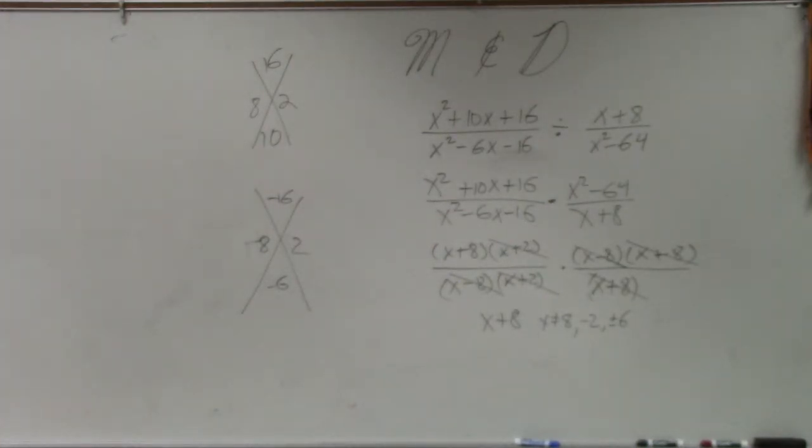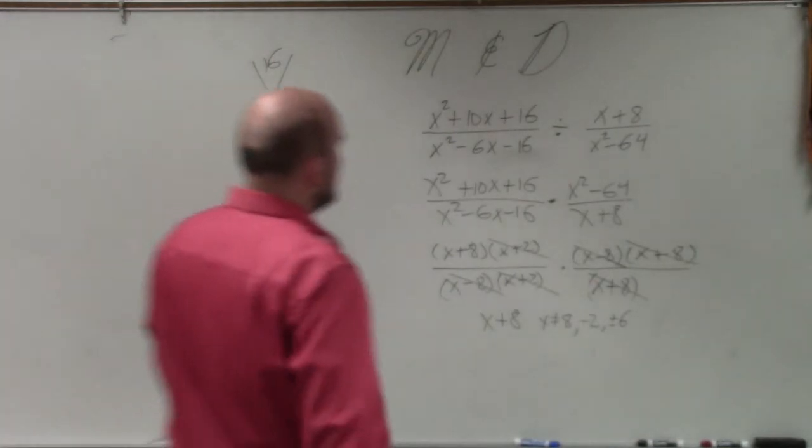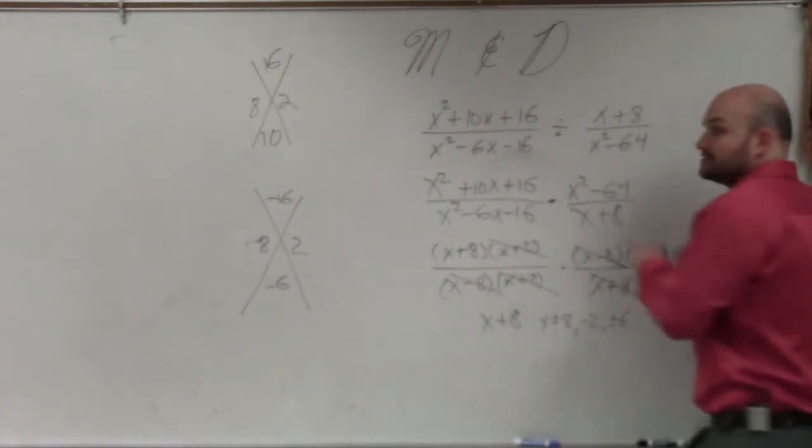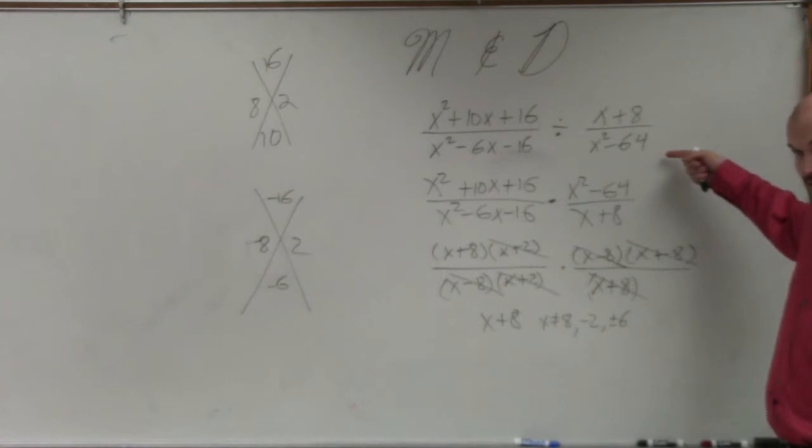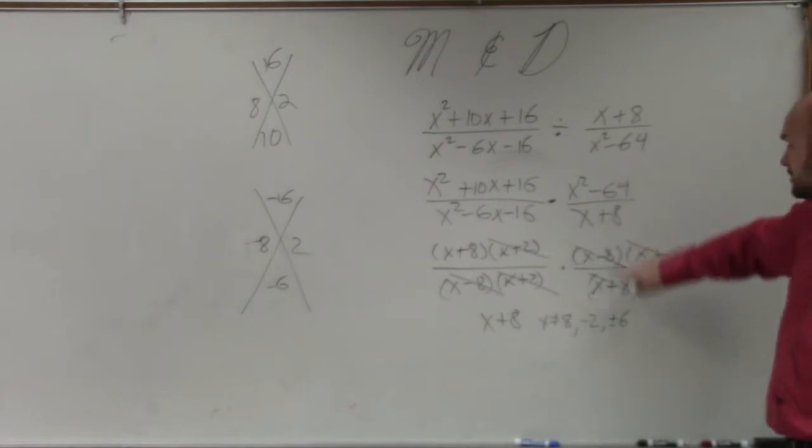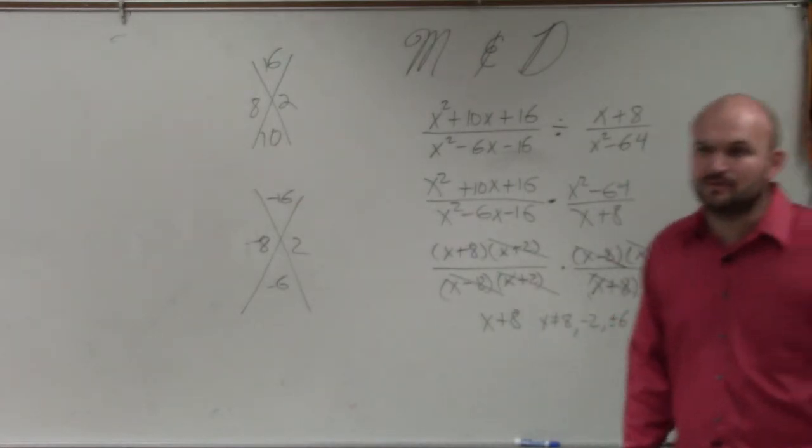Student asks how you know about the 6. Because x squared minus 64 is my original denominator, right? So that factored is x plus 8, x minus 8. So that's going to give you plus or minus 8 as what x cannot equal.